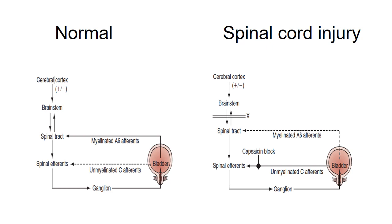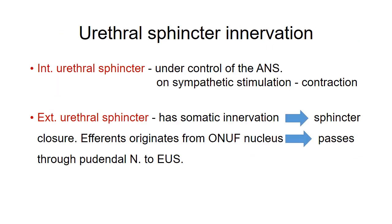Looking at the nerve supply of the urethral sphincter: the internal urethral sphincter is under the control of the autonomic nervous system, and sympathetic stimulation produces contraction of the internal sphincter. The external sphincter, on the other hand, has somatic innervation. On stimulation it produces sphincter closure. The innervation originates from Onuf's nucleus and passes through the pudendal nerve to the external urethral sphincter.